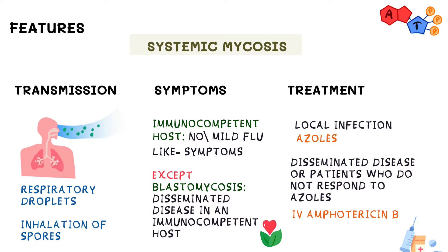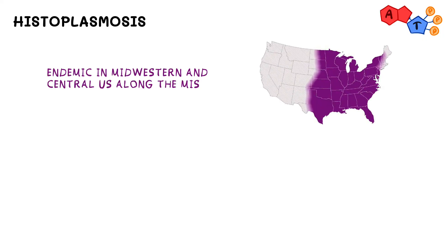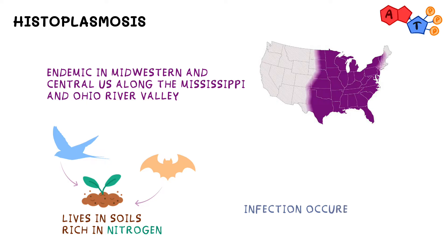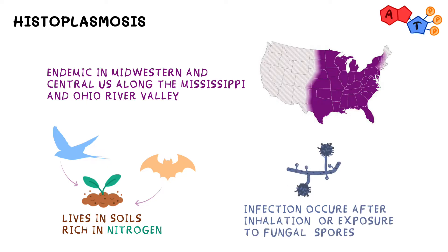The first systemic fungus we'll discuss is histoplasmosis. Histoplasmosis is endemic in the midwestern and central US, along the Mississippi and Ohio River Valley. This fungus lives in soils rich in nitrogen — soils with added fertilizers or with bird or bat droppings. People get infected when they inhale fungal spores on farms, construction areas, or while exploring caves.